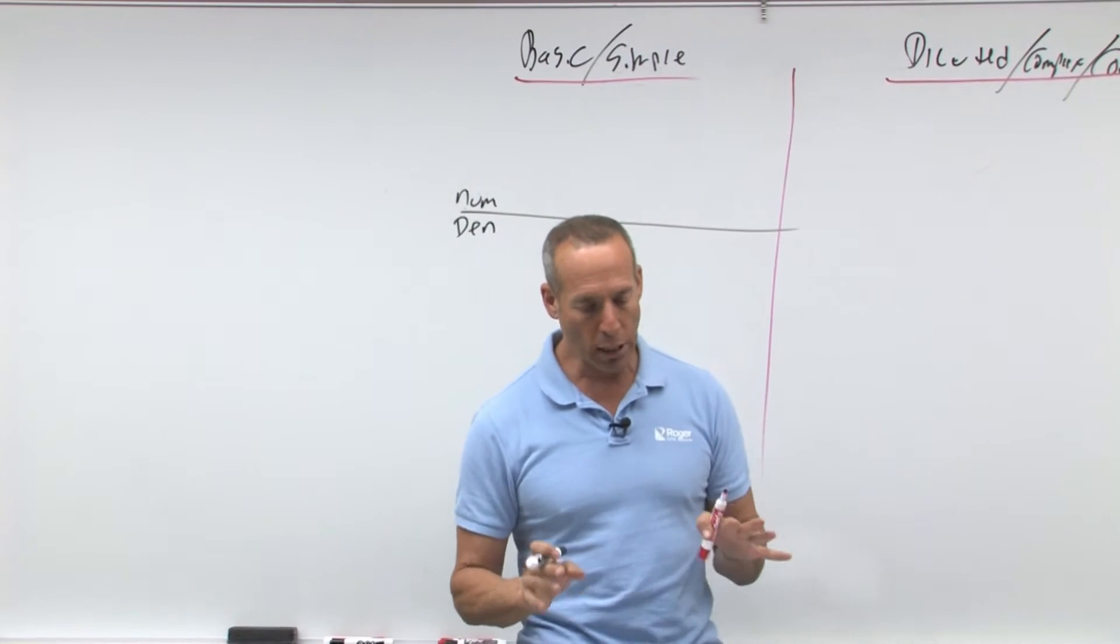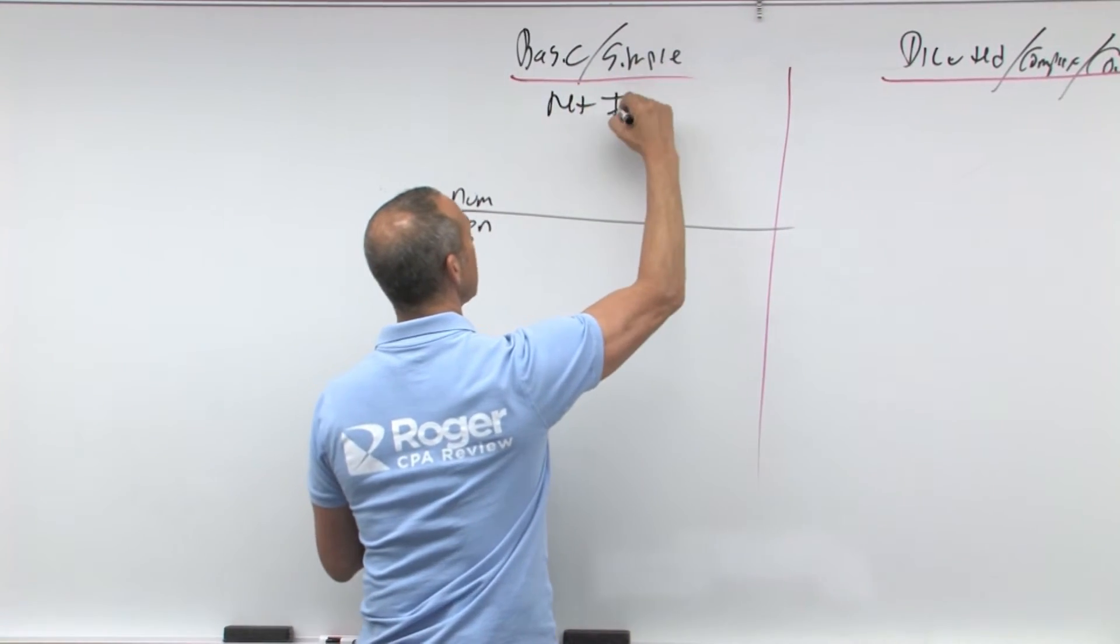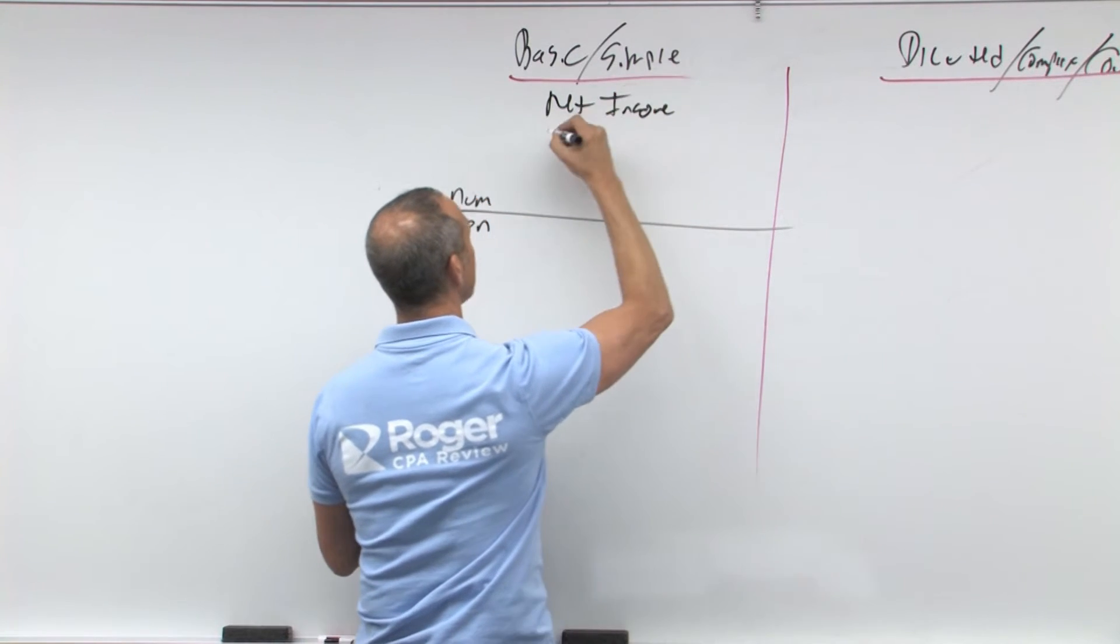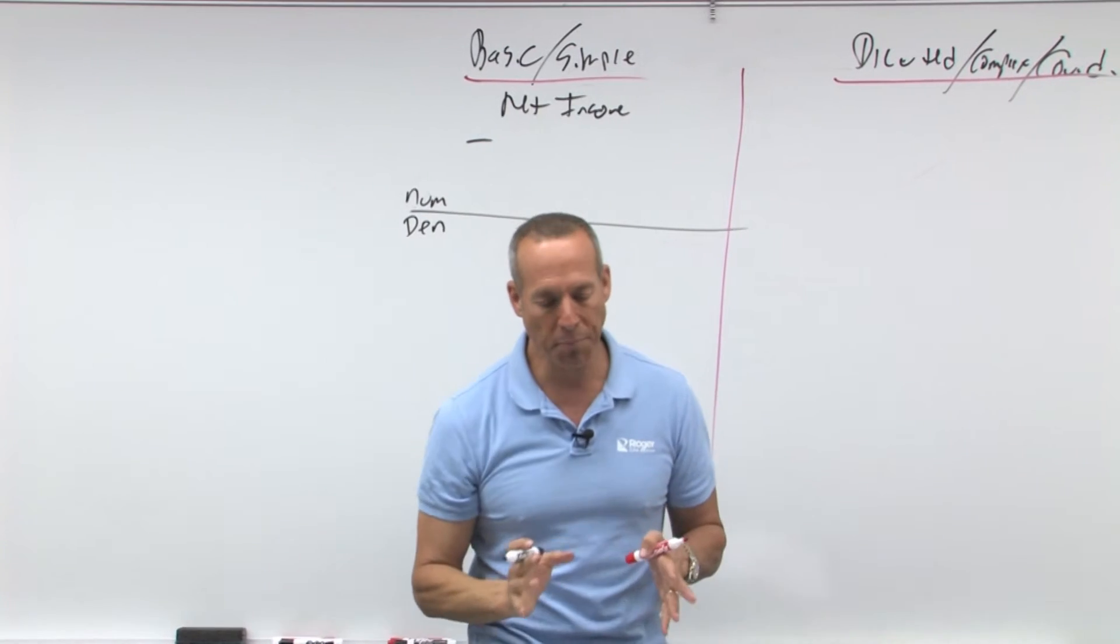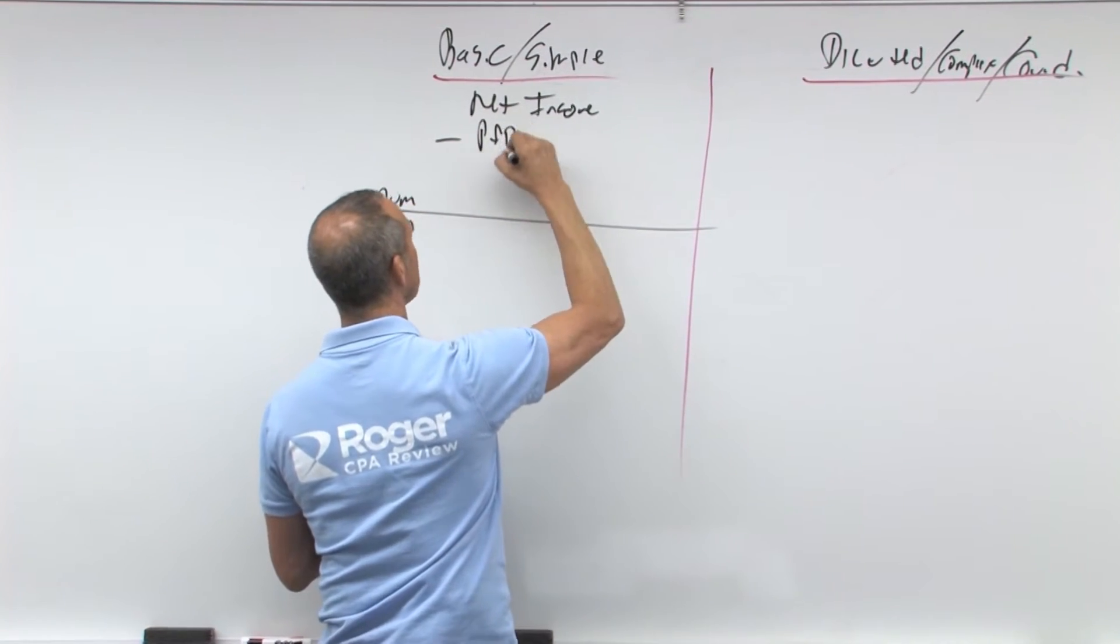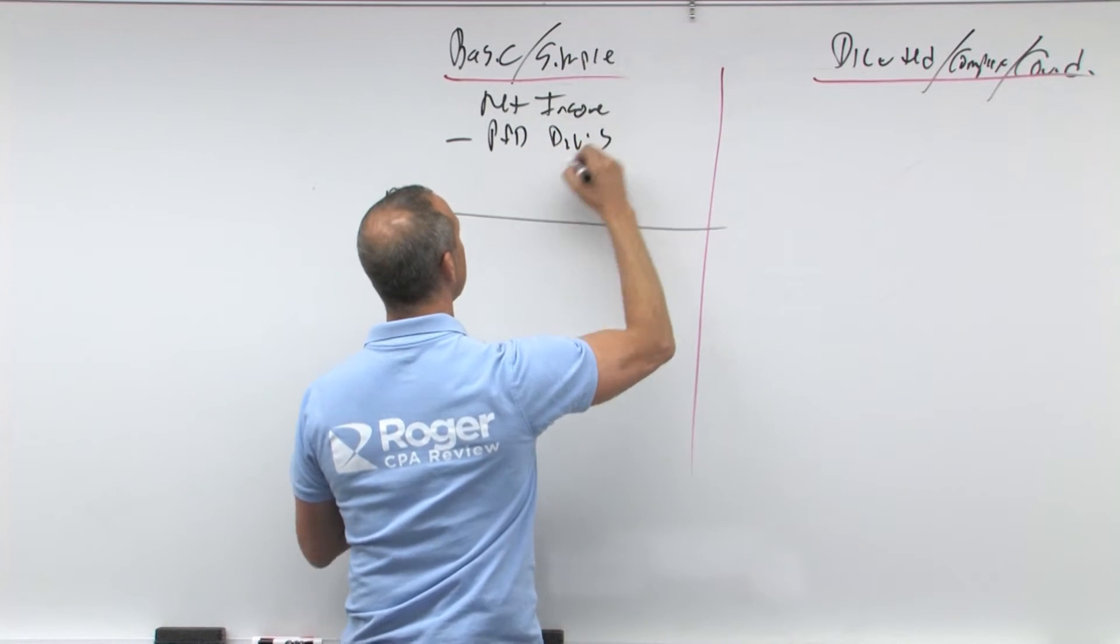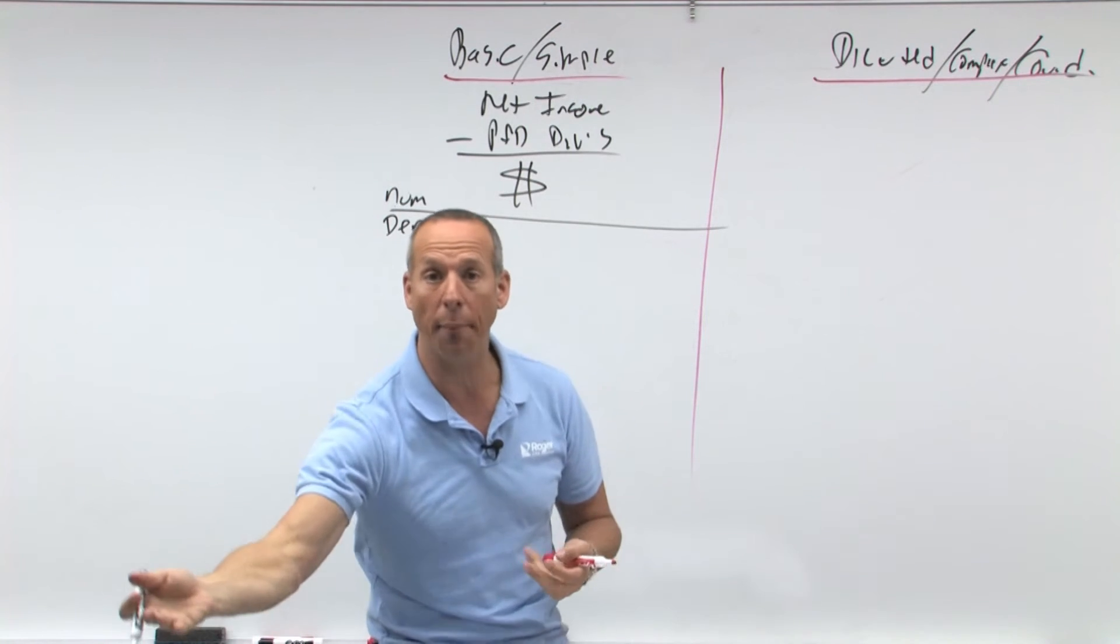In the numerator, we're going to start out with our net income. So we have our net income, and that's our total net income minus something, and this minus something is going to be minus preferred dividends. So this is minus the preferred dividends, why?